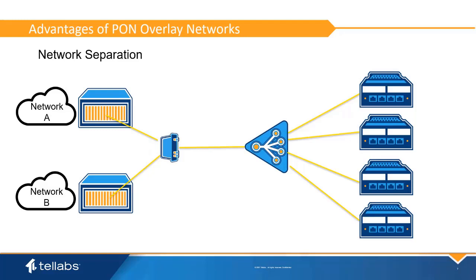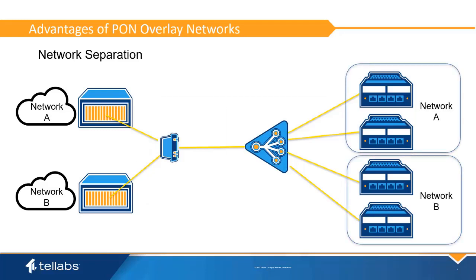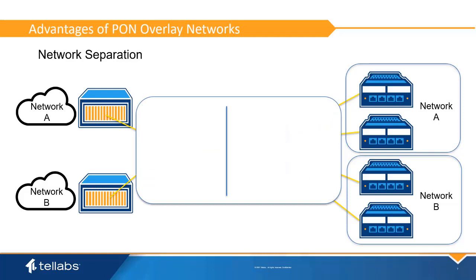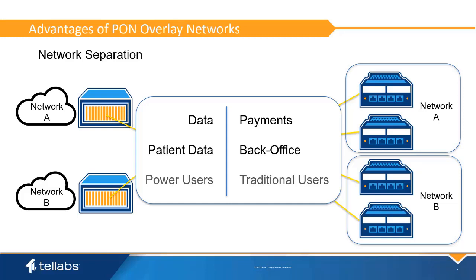Overlay networks allow two or more separate networks to coexist on the same fiber. Examples include separating data and payment systems in retail, separation of patient data, back office systems, and guest services in hospitals, and separation of power users from traditional network users. Network separation can also be used in multiple tenant situations where separation of network traffic is required.